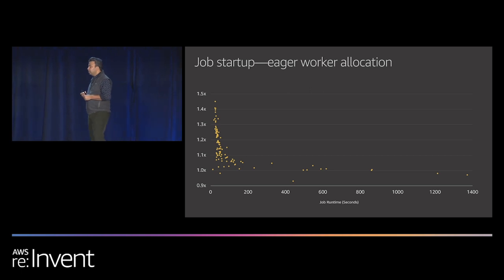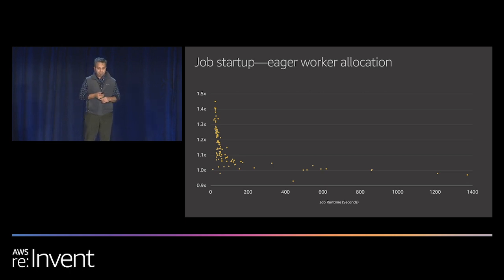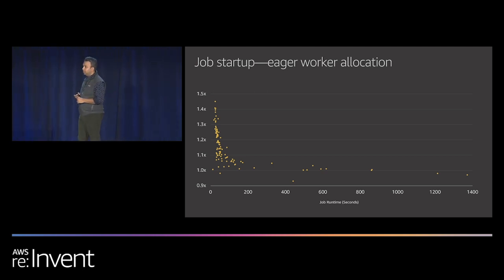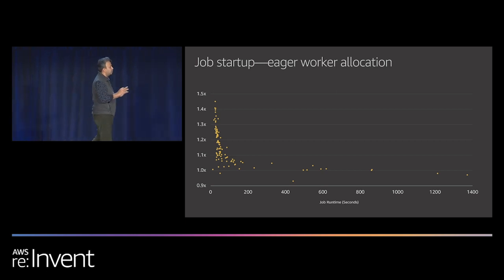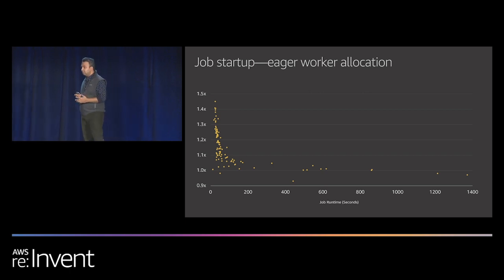On this graph, the x-axis shows the job runtime, and you can see that eager allocation majorly impacts jobs with a short runtime. The y-axis shows the average speedup across queries. You don't have to do anything to get these performance improvements — you just have to upgrade to the new version of EMR. All of these changes are switched on by default.